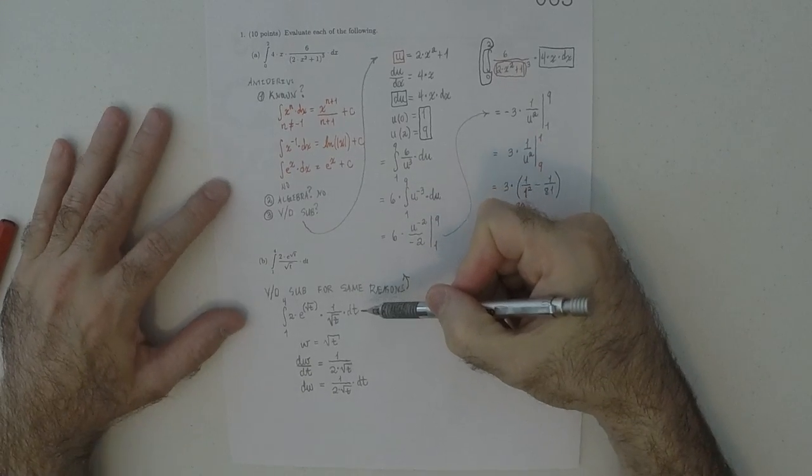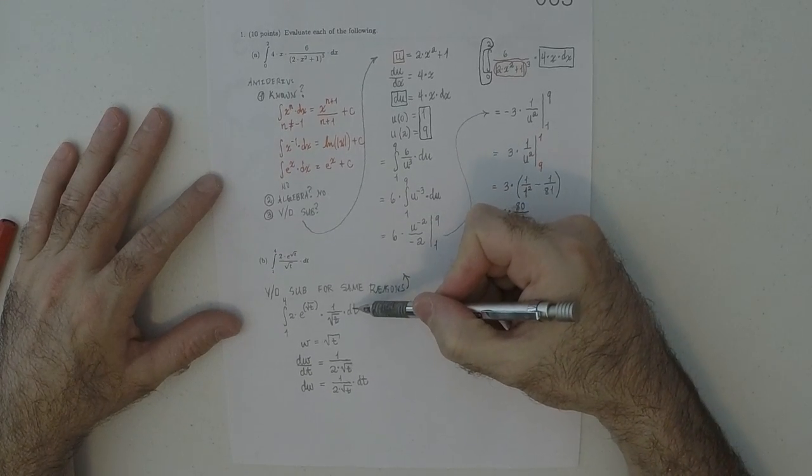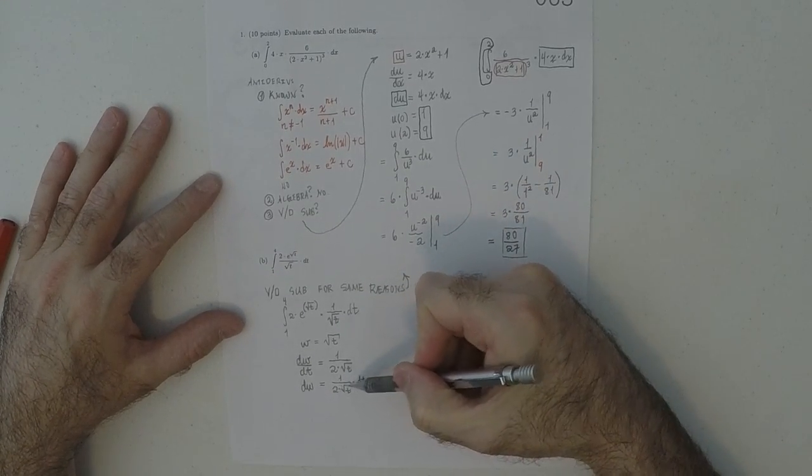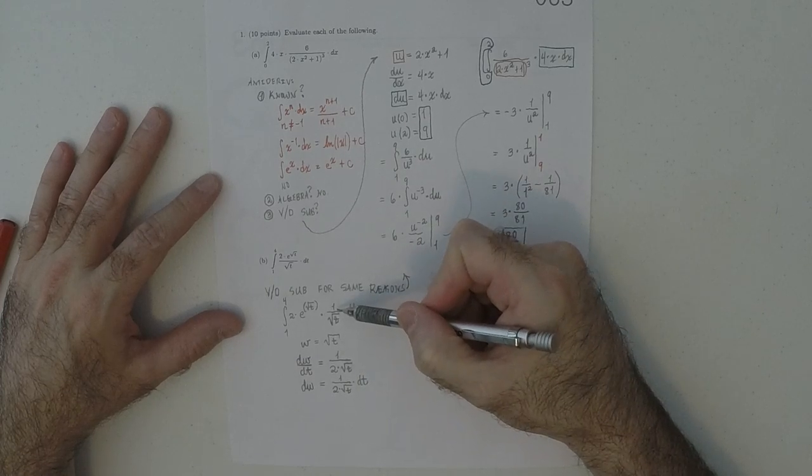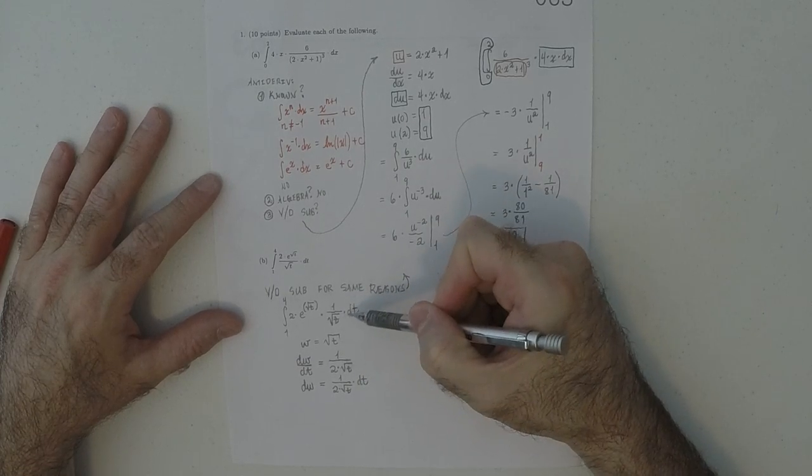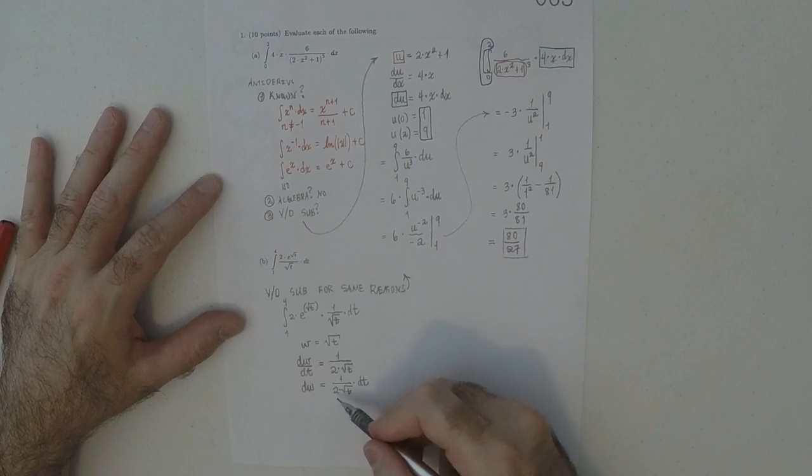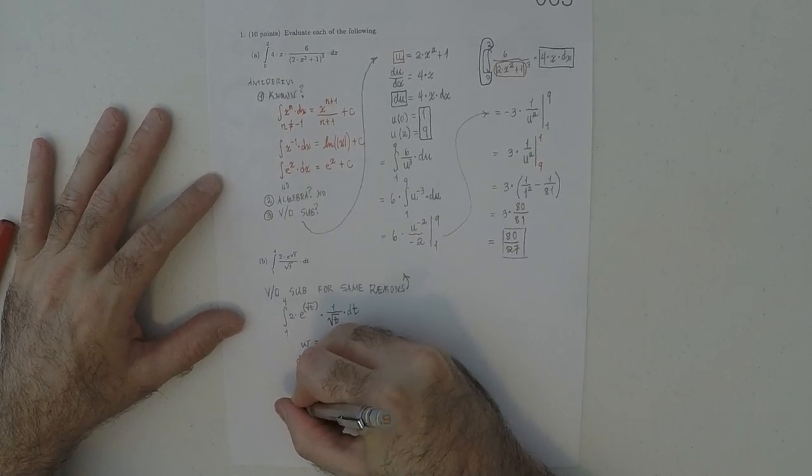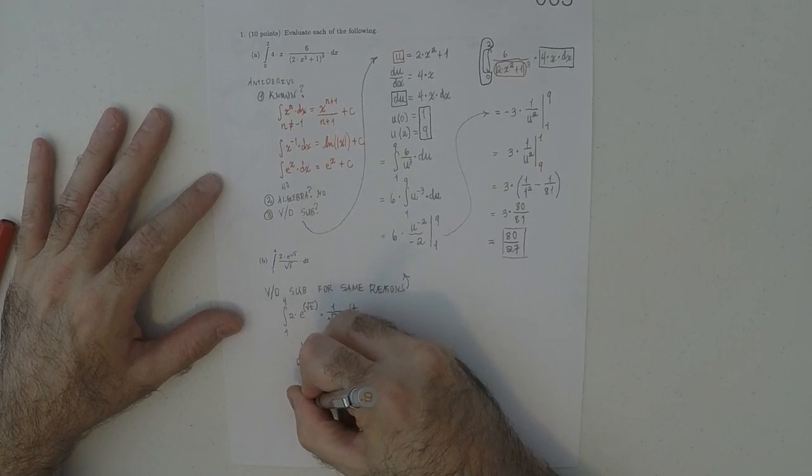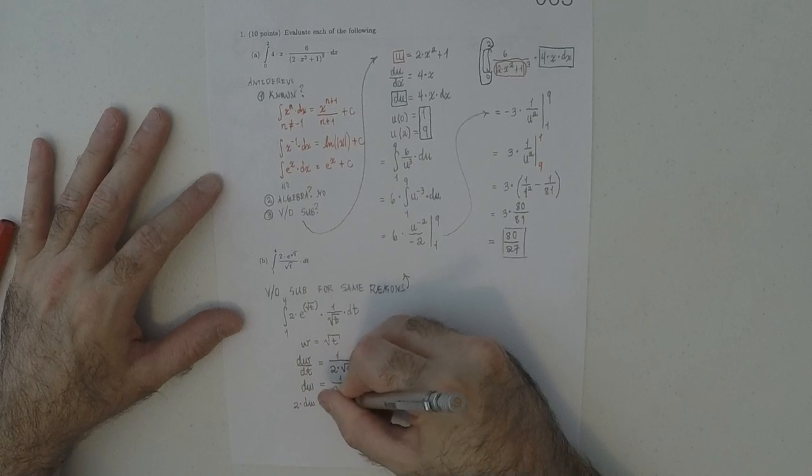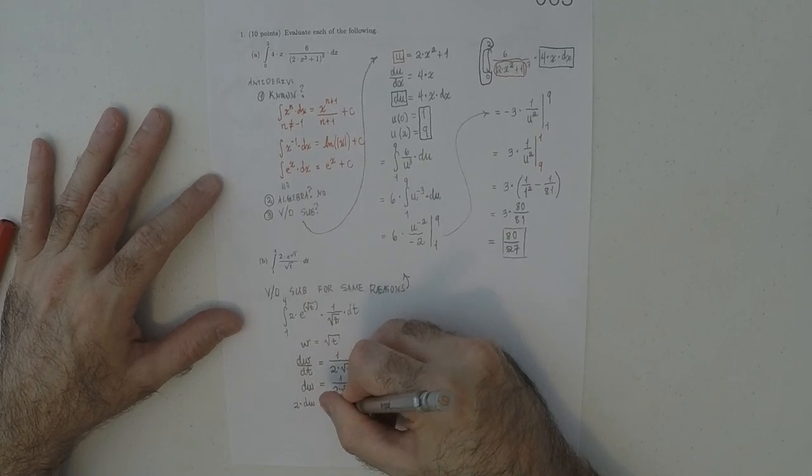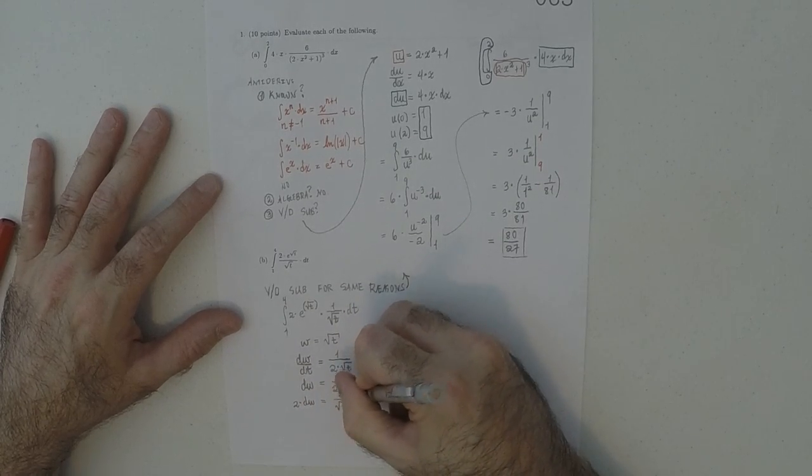Now, having a look at this, we don't have 1 over 2 square root t dt, but we do have 1 over square root t dt. So, then I'll move that 2 to the other side. And get 2 dw is 1 over square root t dt.